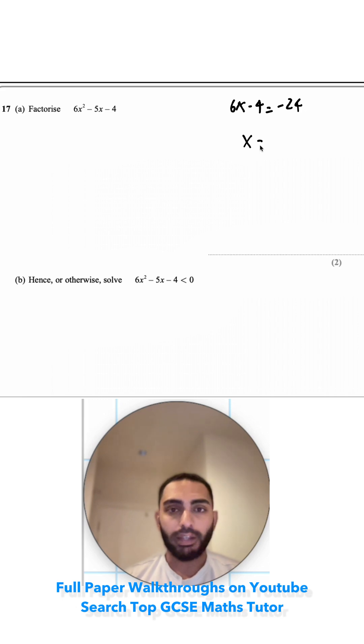So I'm looking for two numbers that multiply to make negative 24, and they're going to add to make this b coefficient. So they're going to add to make negative 5.